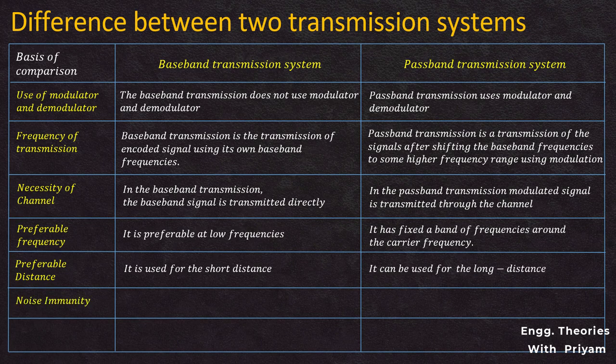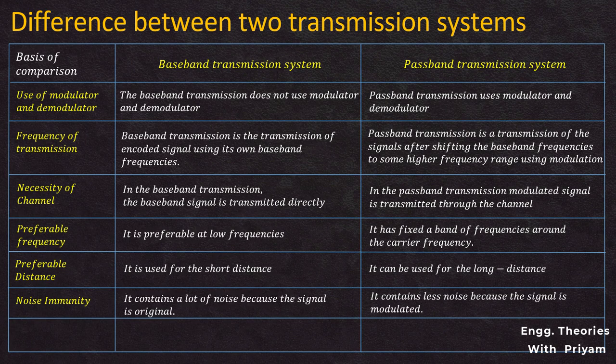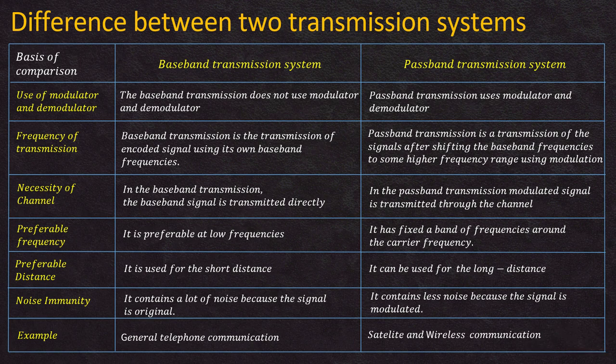Regarding noise: baseband transmission contains more noise because the signal is original and unmodulated, whereas passband transmission contains less noise because the signal is modulated. Examples: baseband transmission — general telephone; passband transmission — satellite or wireless communication.